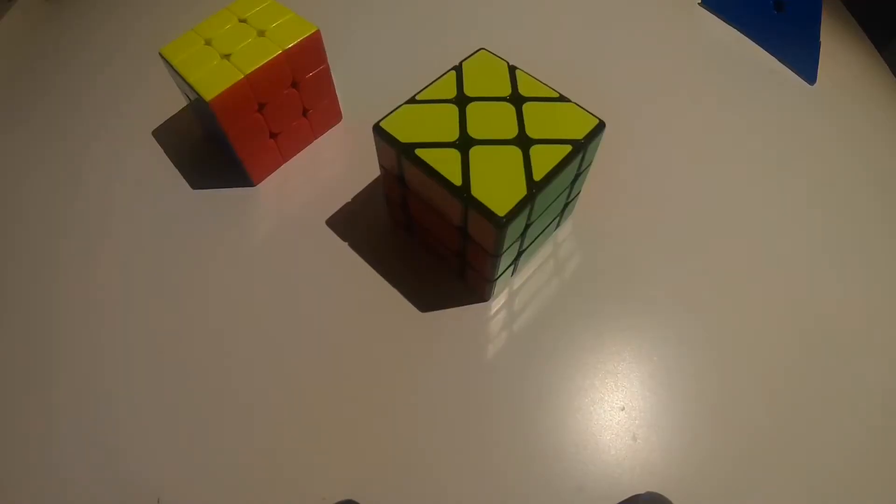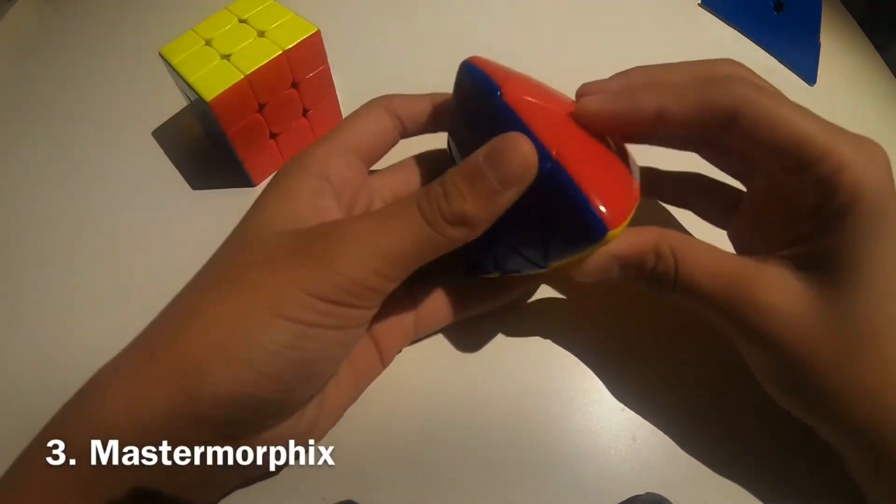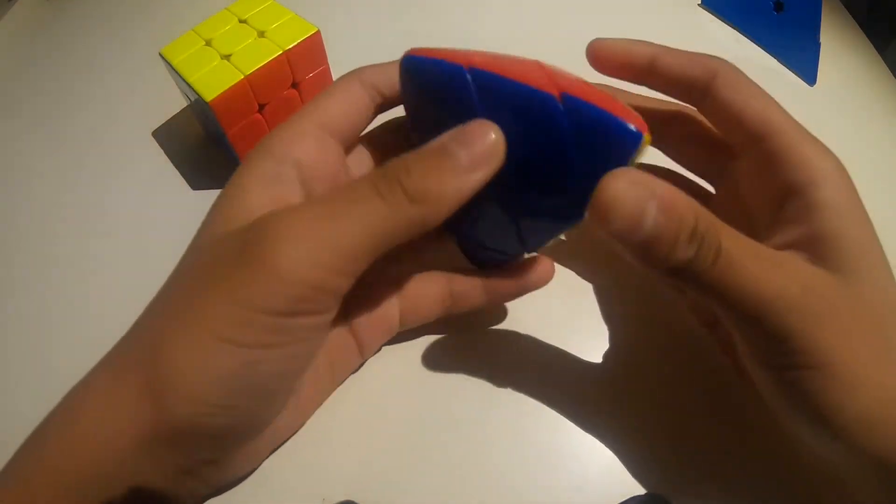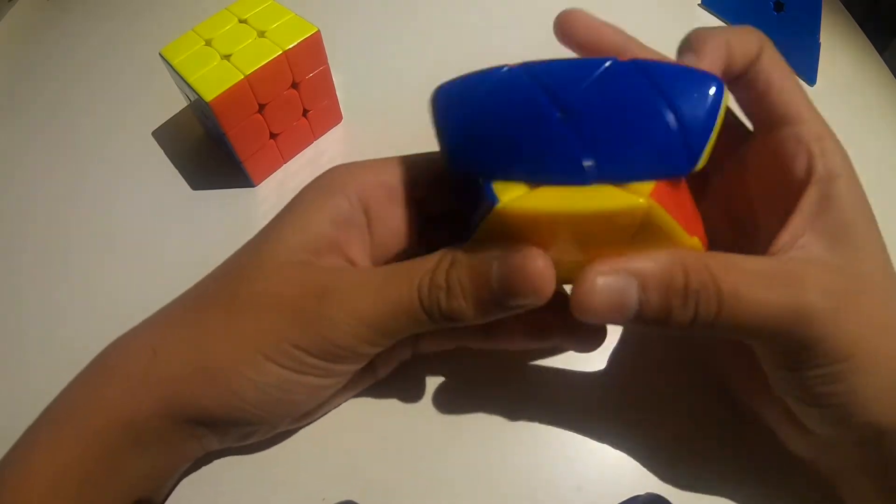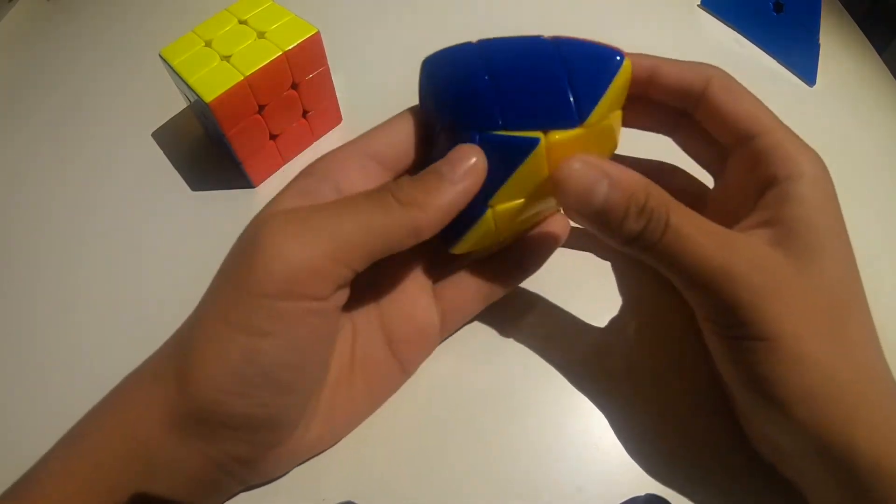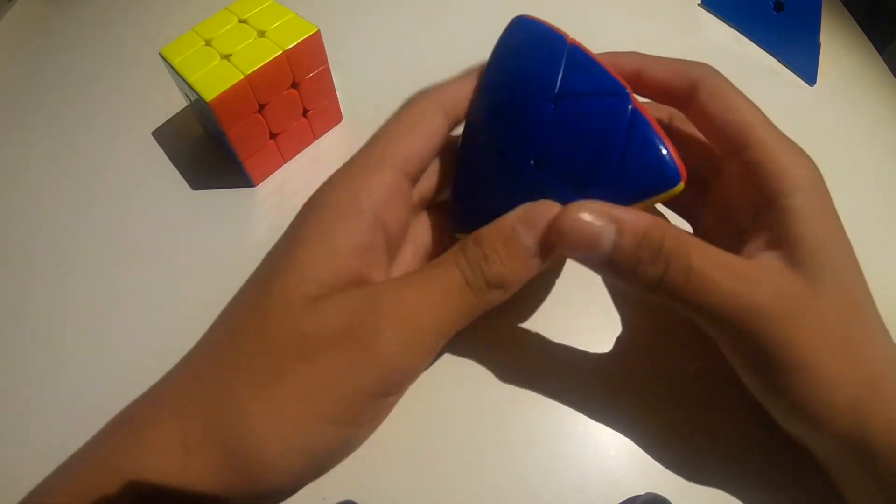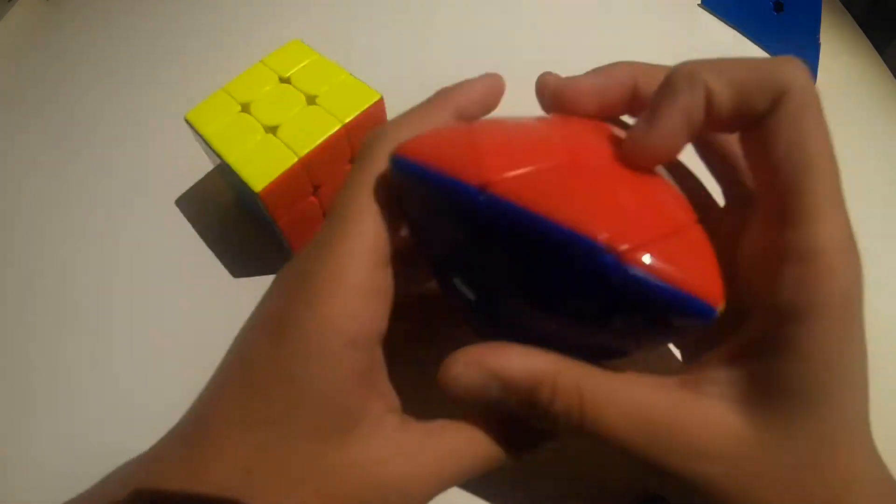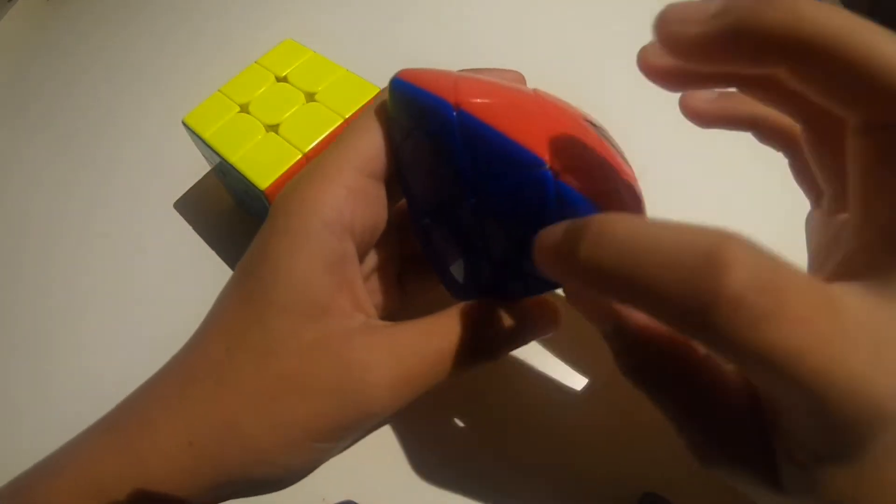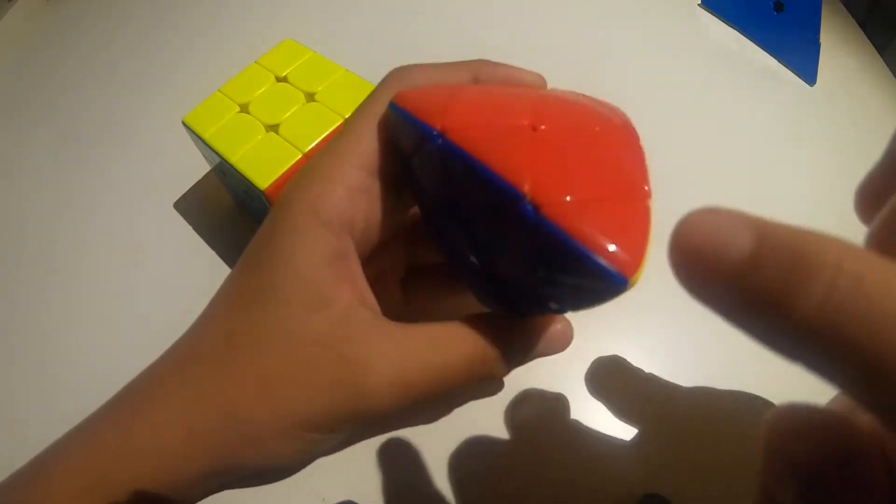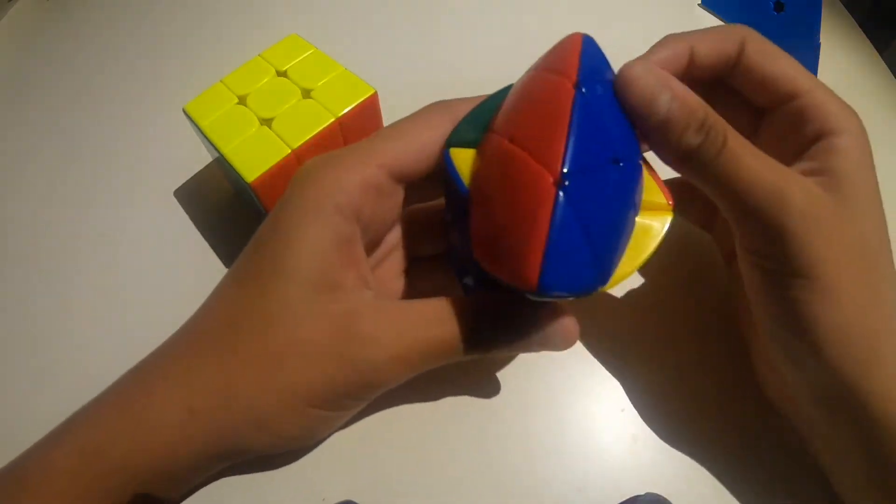At number three we have another shape mod. It's the Master Morphix. So like I said, it's another 3x3 shape mod. But although this time, it's a lot more ridiculous. So you might not be able to see it, but here's the center, edges, corners. So this is the top layer.